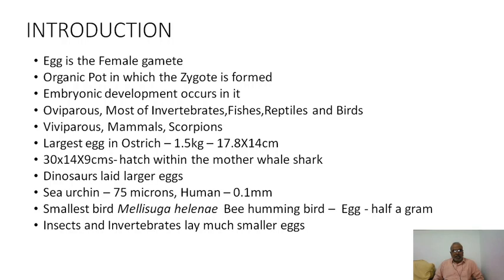Egg is the female gamete, called the organic pot in which the zygote is formed and the entire embryonic development occurs. All materials needed for embryonic development, cell division, and protein synthesis are already kept inside the egg — including mRNA molecules, ribosomes, and proteins — placed by the mother either by absorption or by synthesis.